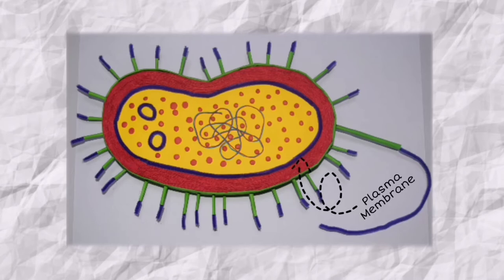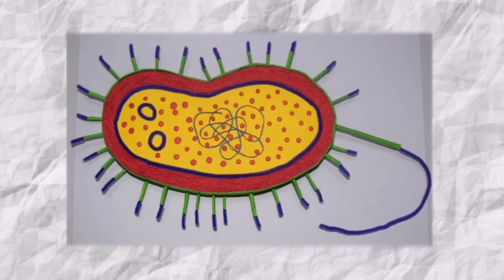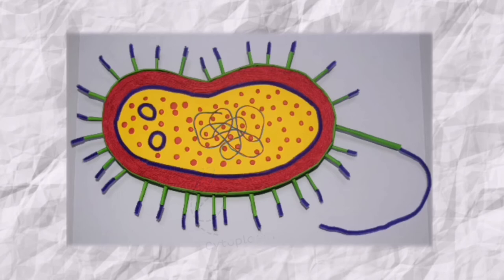The plasma membrane. It separates the cell from the surrounding interstitial fluid, the main component of the extracellular fluid. The cytoplasm. It's where the functions for cell growth, metabolism, and replication are carried out.